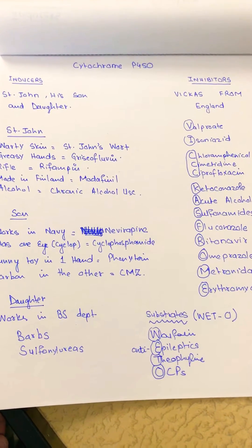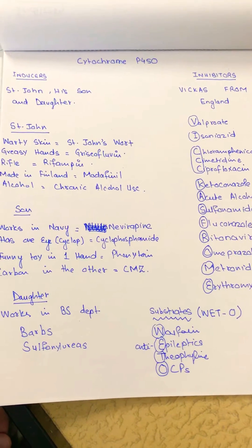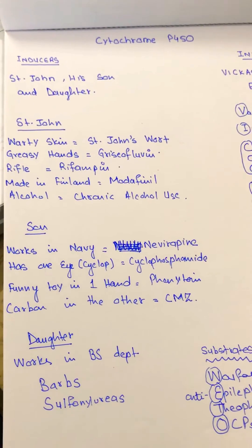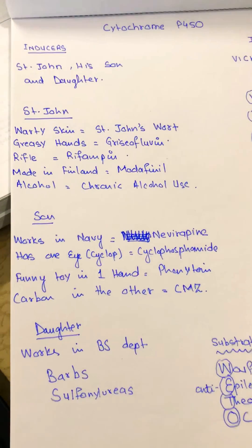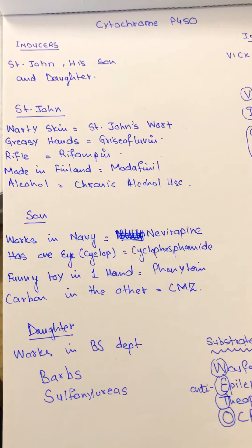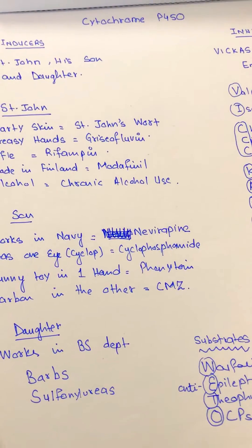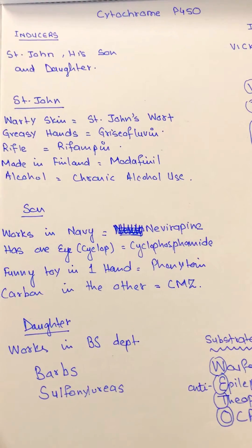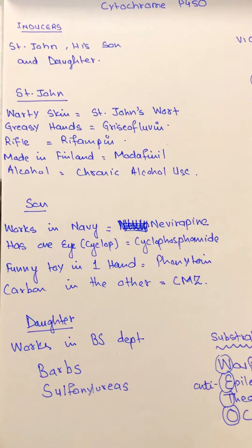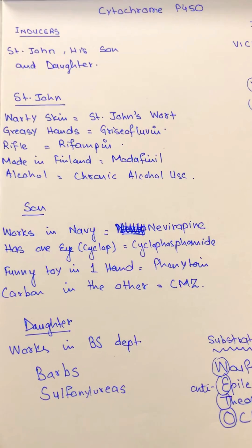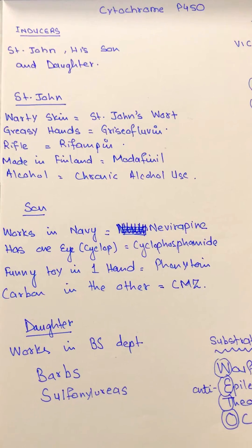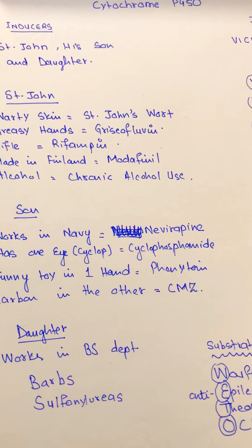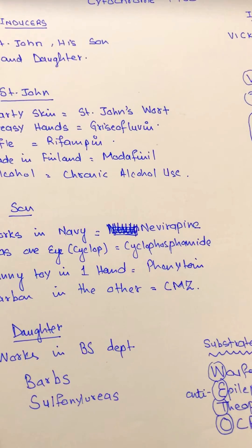Cytochrome P450 inducers, inhibitors, and substrates. First we will start with the inducers. Think of a person named St. John who has warty skin and crazy hands. He holds a rifle made in Finland in one hand and a bottle of alcohol in the other. So St. John's: St. John's Wort, griseofulvin, rifampin, modafinil, and chronic alcohol use.